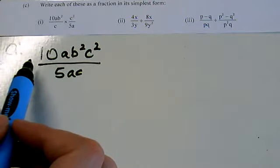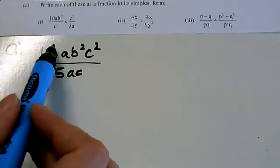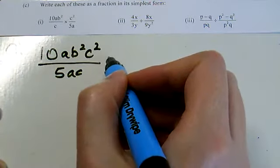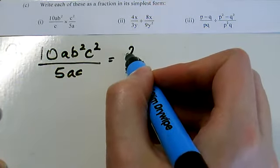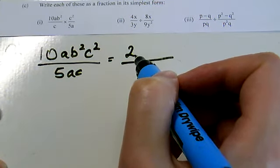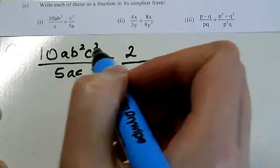Over here, starting with the numbers, I've got 10 and 5, both of which are multiples of 5, so let's divide both by 5. So I've got 2 on the top, and I'm not going to put the 1 on the bottom because there's going to be other stuff. Anyway, maybe I will, who knows.